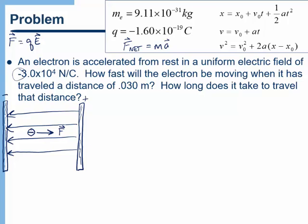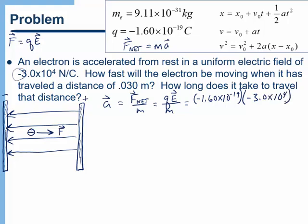The first thing I'm going to do is figure out the acceleration of the electron. Acceleration equals net force divided by mass, and the only force acting is the electrical force, so a = QE/m. We have negative 1.6 × 10⁻¹⁹ C, and the electric field is to the left so I put a negative: −3 × 10⁴. Dividing by the mass of the electron, 9.11 × 10⁻³¹ kg, the acceleration is 5.3 × 10¹⁵ m/s².